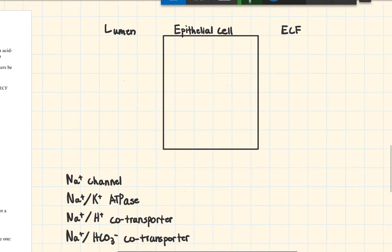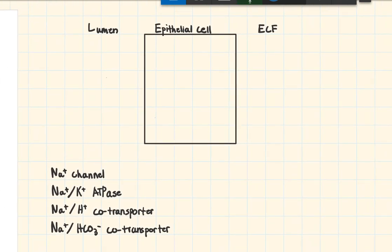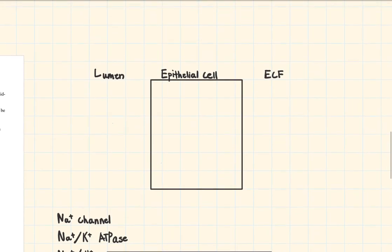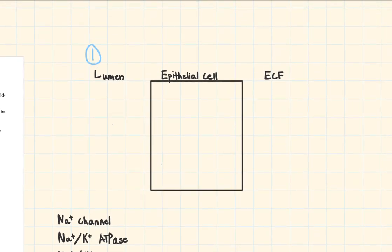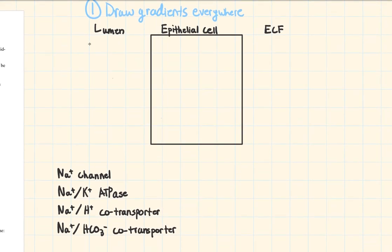Let's go over to the drawing. You can pause and draw this yourself. To set up this problem we're going to do two things, and the setup takes a little bit of time, but if you are consistent with your setup then your chances of getting this problem wrong are very slim. Step one is to draw your gradients everywhere — using the chart to determine what the gradients are for each ion.